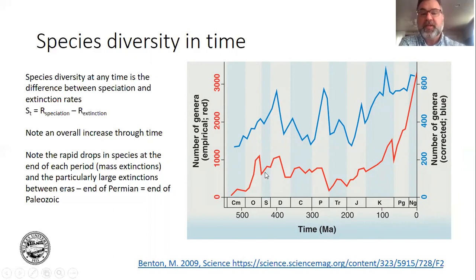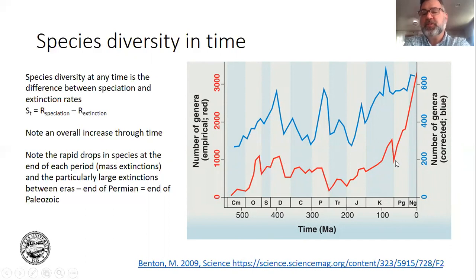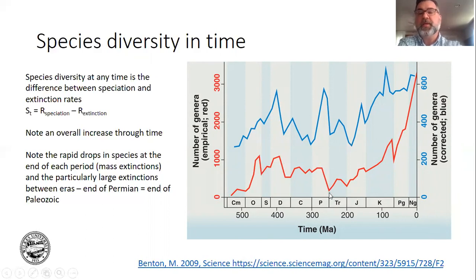Some of these extinction events are relatively minor — small dips — and some are large. The end of the Ordovician, the Devonian, the Permian, and the Cretaceous are mass extinction events. The most dramatic was the end of the Permian.